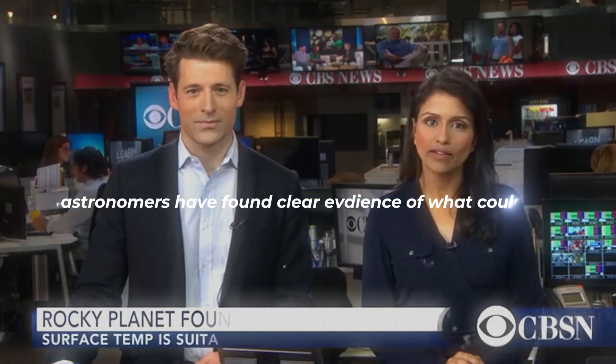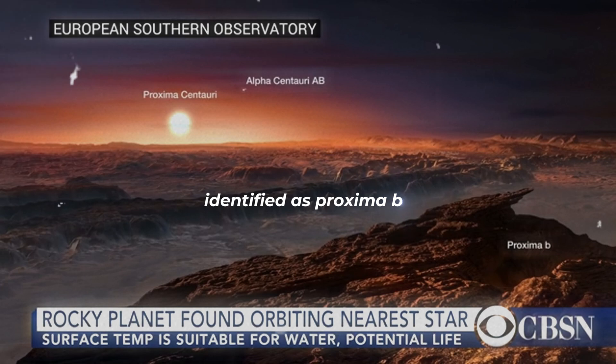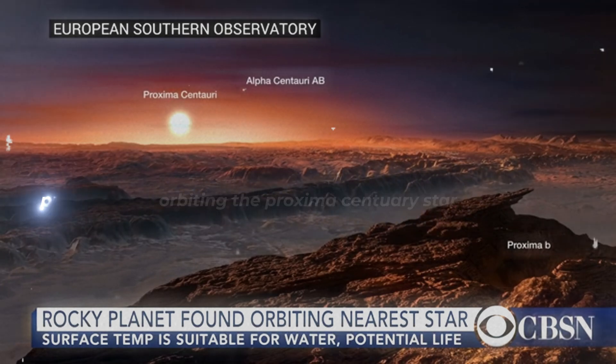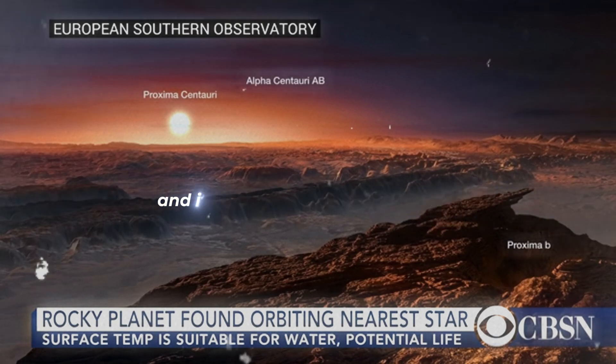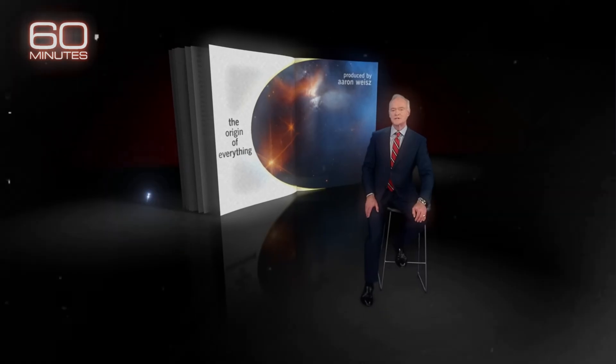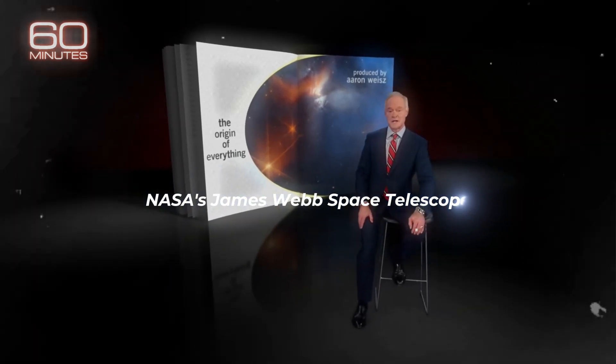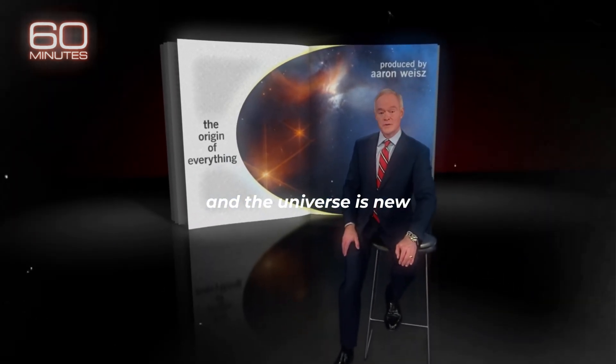Astronomers have found clear evidence of what could be an Earth 2.0. This artist's rendering shows the rocky planet identified as Proxima B orbiting the Proxima Centauri star. Proxima Centauri is the closest star to our planet apart from the sun, and it is about 4.25 light years away.